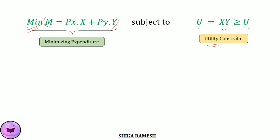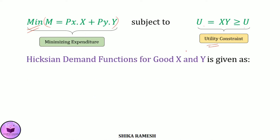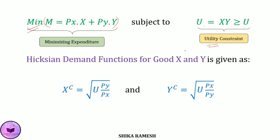Already having the Hicksian demand functions for good x and y, the compensated demand for good x is equal to the square root of U multiplied by Py divided by Px, and the compensated demand for good y is equal to the square root of U multiplied by Px divided by Py.